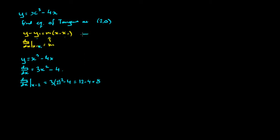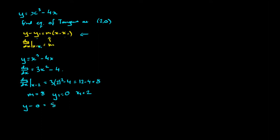Now we can apply the formula. We set out all our values: m is equal to 8, y1 is equal to 0, x1 is equal to 2. So y minus 0 equals 8 times (x minus 2), giving us y equals 8x take away 16.